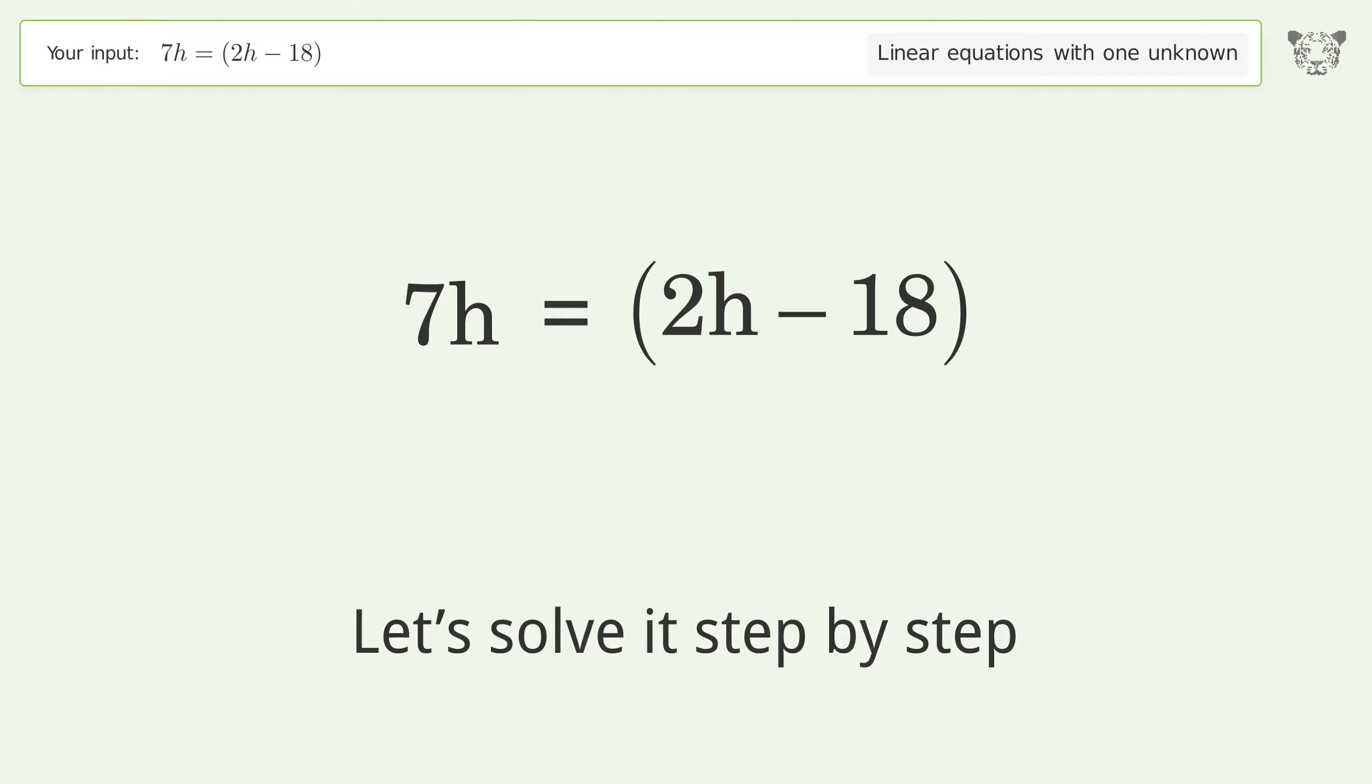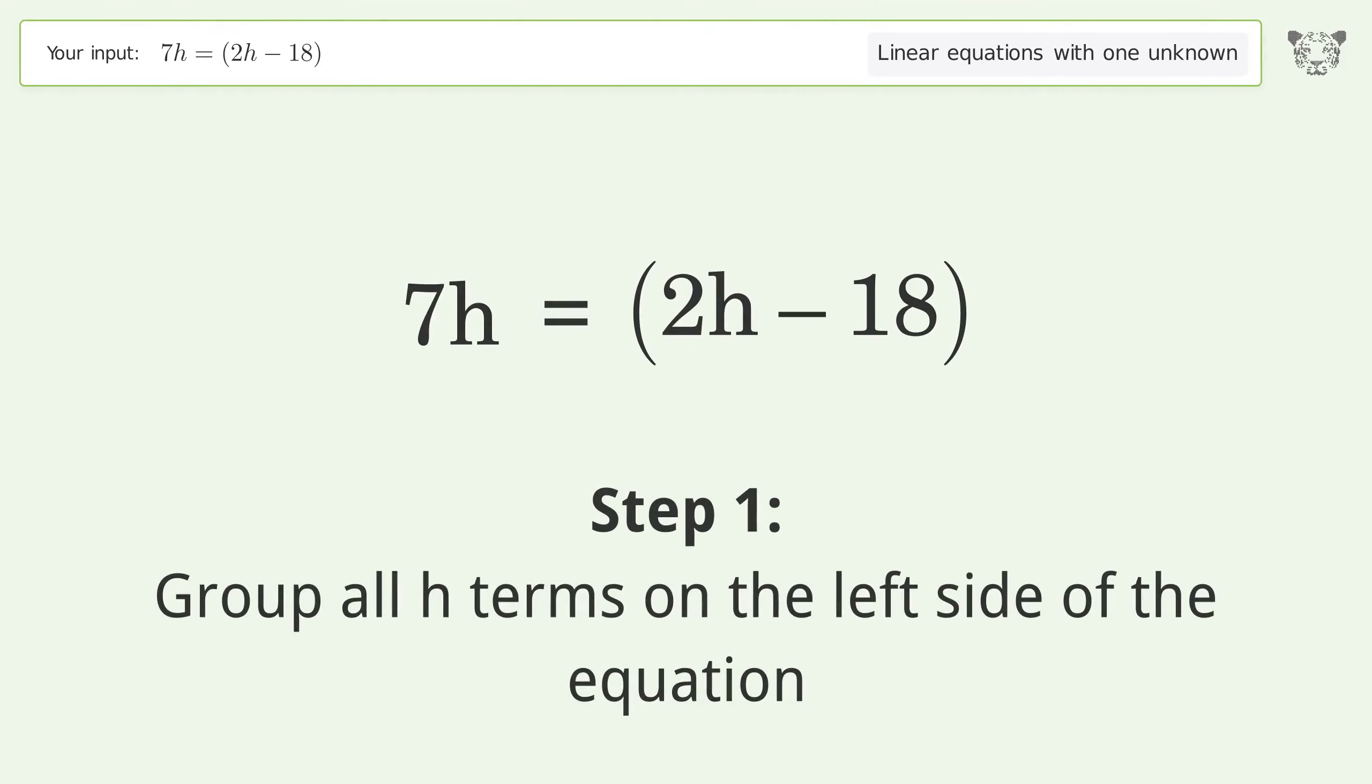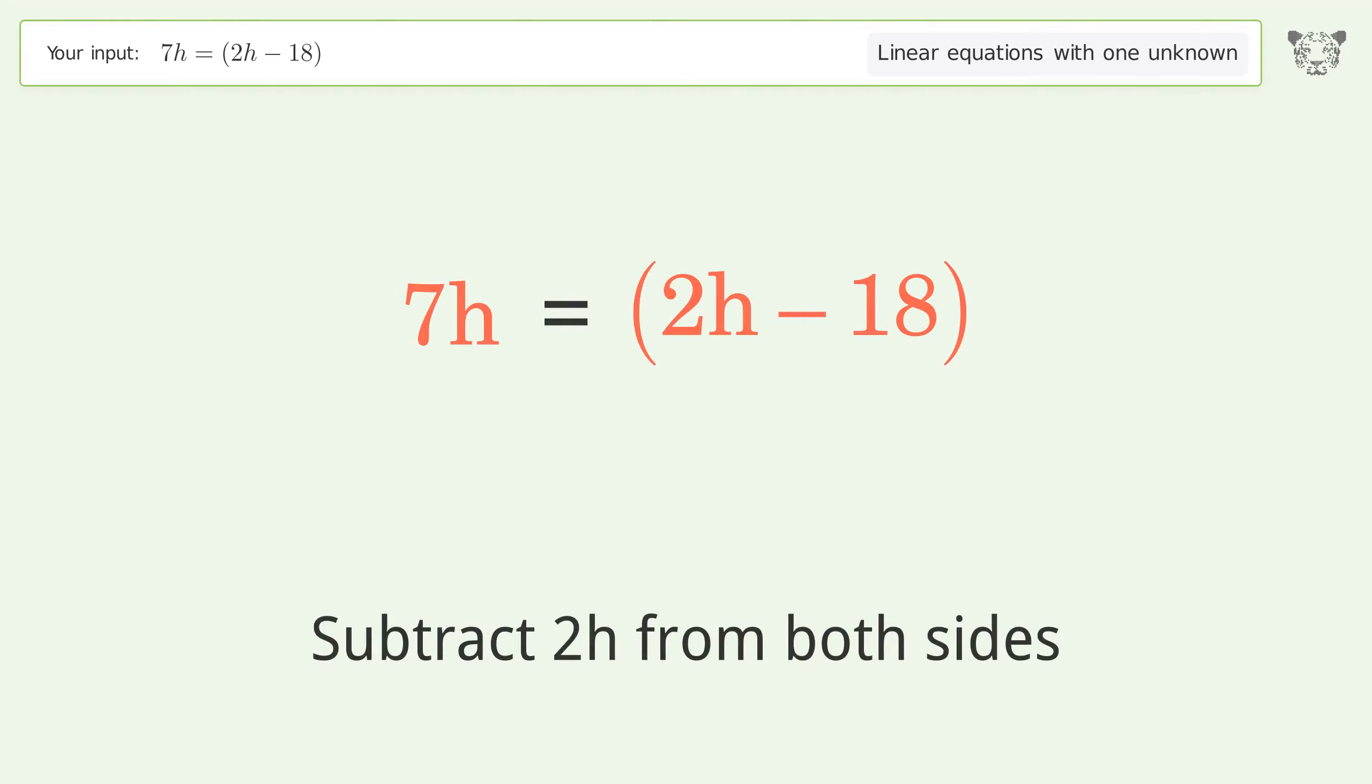Let's solve it step by step. Group all h terms on the left side of the equation. Subtract 2h from both sides.